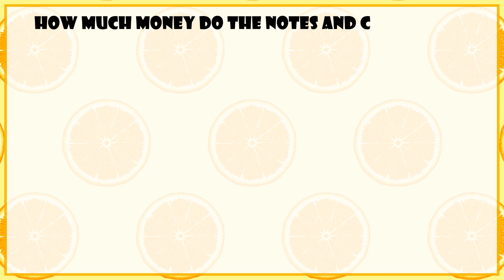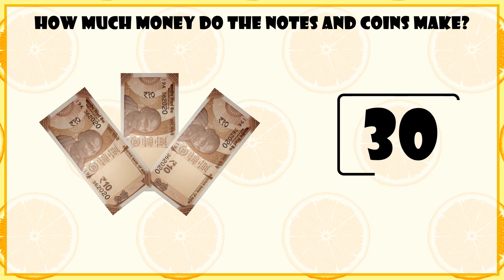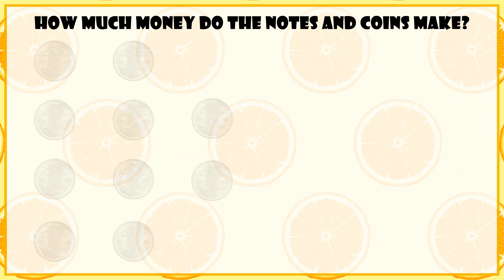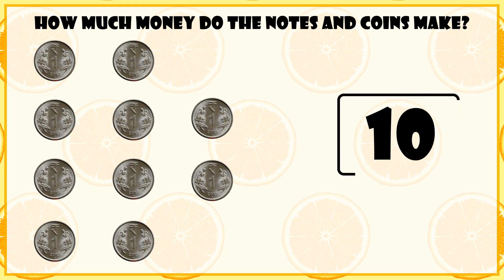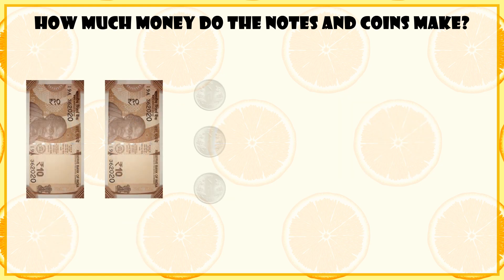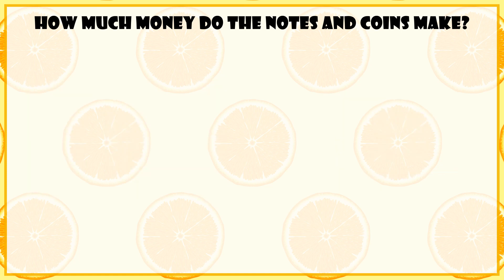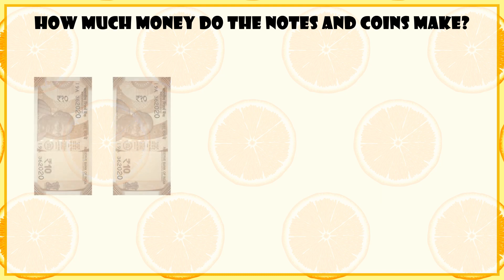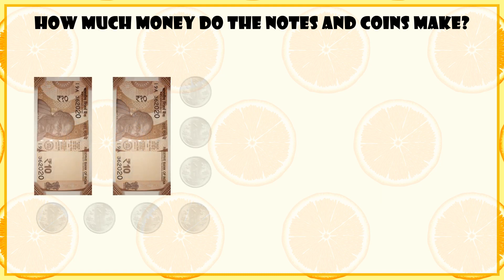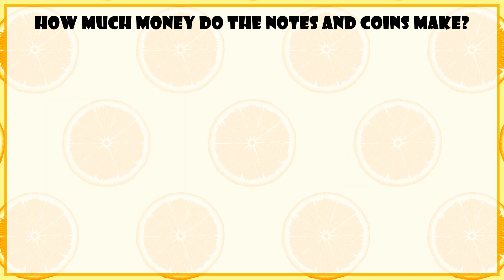How much money do the notes and coins make? Three 10-rupee notes and three 1-rupee coins make 23 rupees. Four 10-rupee notes and five 1-rupee coins make 27 rupees.